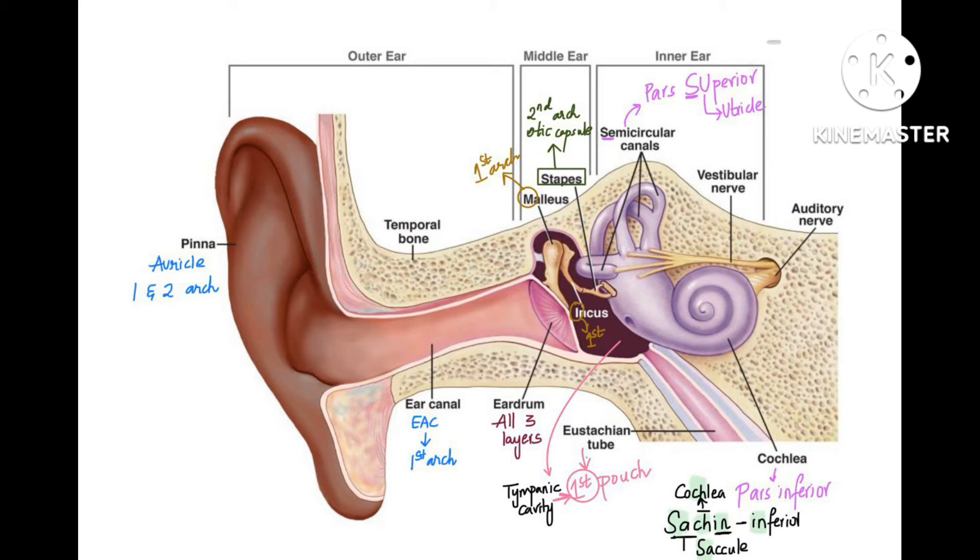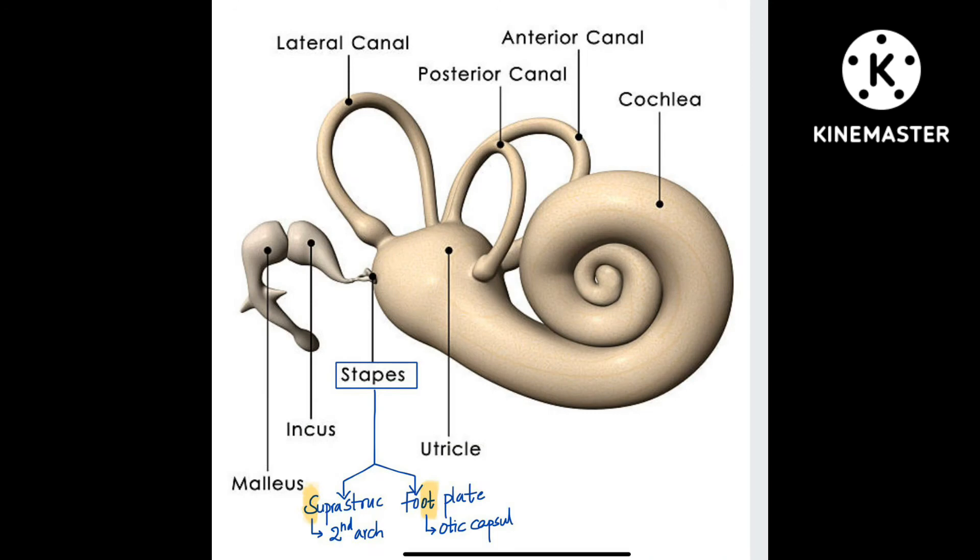I have brought few other pictures also. This is the picture showing cochlea, the semicircular canals, malleus, incus, and stapes. Stapes has supra structure and foot plate, two parts. Supra structure is from the second arch, S and S, whereas foot plate is from the otic capsule. Foot has O-T letters in it and otic capsule also has O-T.